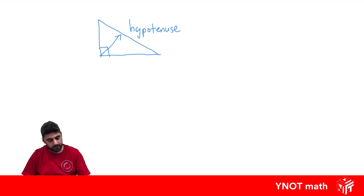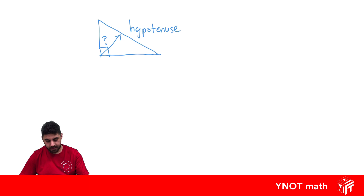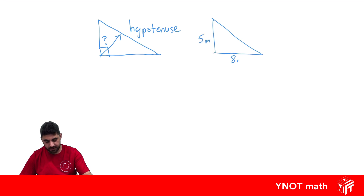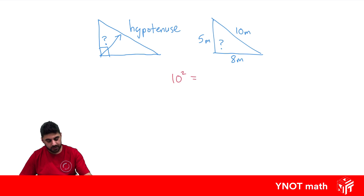In this triangle, we want to know if it is right-angled, because Pythagoras' theorem only works if the triangle is right-angled. Let's have a look at this one. So we've got 5 meters, 8 meters, and 10 meters. Is this a right-angled triangle? If it is, Pythagoras' theorem will hold true. Pythagoras' theorem says the longer side, or the hypotenuse, squared equals the other two sides squared and added together.